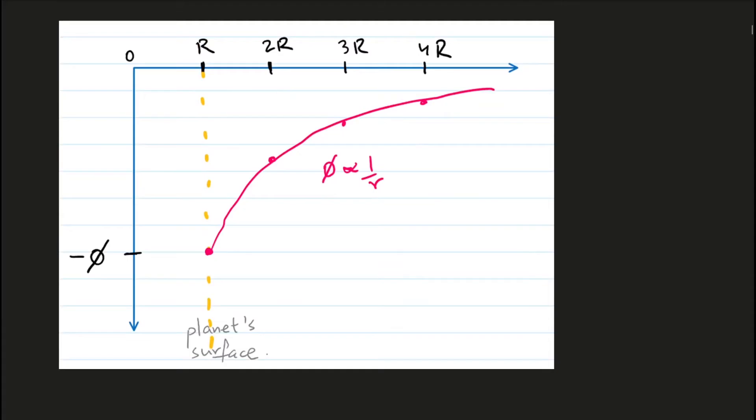This is the graph of gravitational potential versus the distance from the surface of a planet, star, moon, or any mass. An important thing to note is that gravitational potential is always negative, so the graph is always below the x-axis — it never goes above it. It does not show an inverse square relationship like gravitational field strength; instead it shows an inverse relationship between the potential and r. So if r doubles, the potential will become half, and if r triples, the potential will divide by a factor of three.